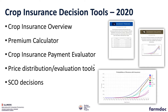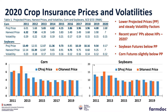We'll look at the crop insurance payment evaluator tool — a second tool that evaluates the likelihood for payments, size of payments, frequency of payments, and the impact on risk reduction of alternative choices. Following that, we'll look at a price distribution and evaluation tool. If you followed markets over the weekend, we'll show an interesting way that markets summarize likelihoods for future price changes.